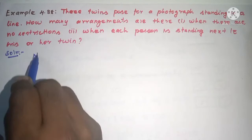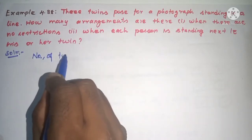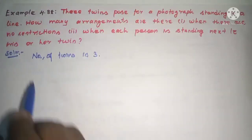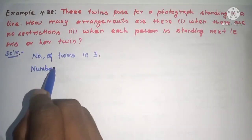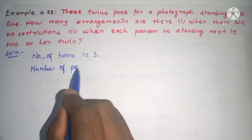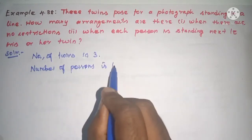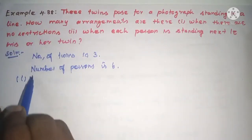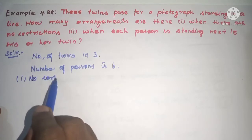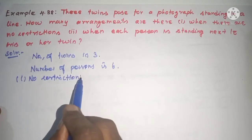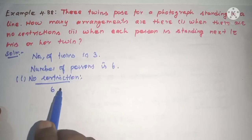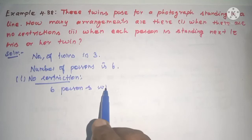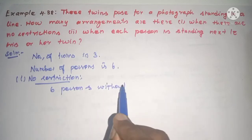Number of twins is 3, so number of persons is 6. Submission 1: No restrictions. 6 persons without any restriction.